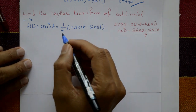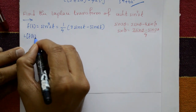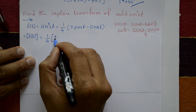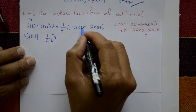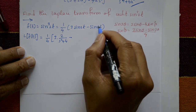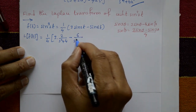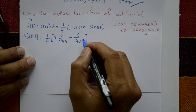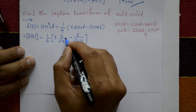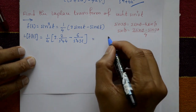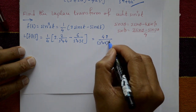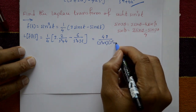Now applying the Laplace transform on both sides: L{f(t)} = 1/4 · [3 · L{sin(2t)} − L{sin(6t)}] = 1/4 · [3 · 2/(s²+4) − 6/(s²+36)]. Taking the LCM gives 48 / [(s²+4)(s²+36)].